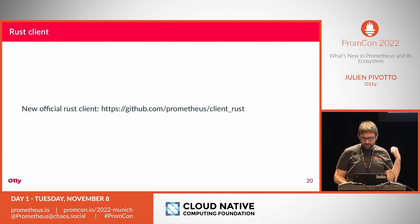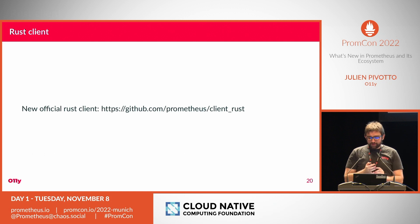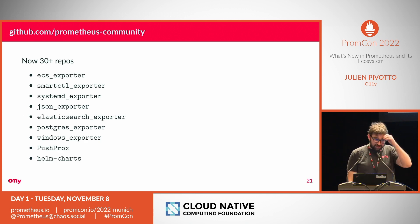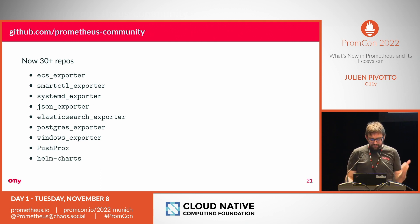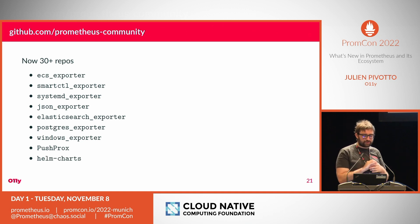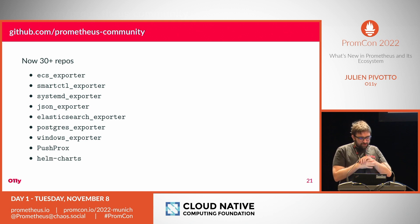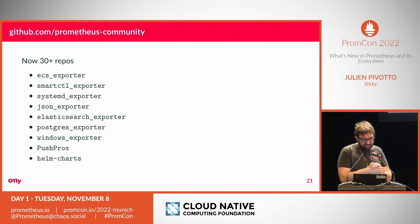In the ecosystem, we have a new Rust client library for Prometheus, made by Max from the Prometheus team. We also have the Prometheus Community organization — managed by the Prometheus team but with many external contributors — featuring over 30 repositories including the ECS exporter contributed by Amazon, smartctl, the systemd exporter, the JSON exporter, Elasticsearch, Postgres, the Windows exporter (formerly WMI exporter), PushProx for traversing NATs with Prometheus, and the Helm chart repository.